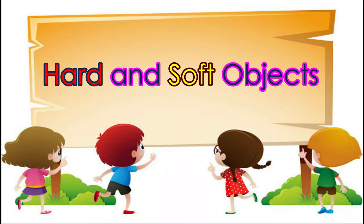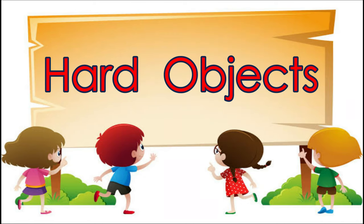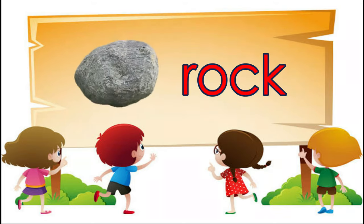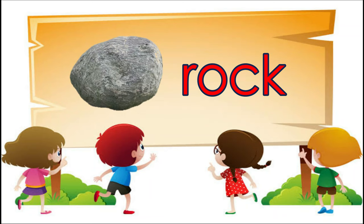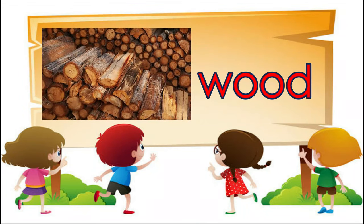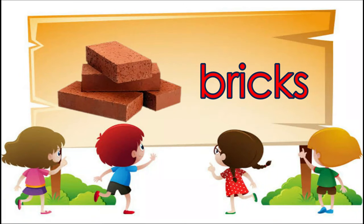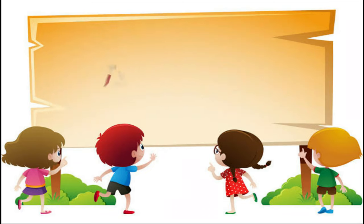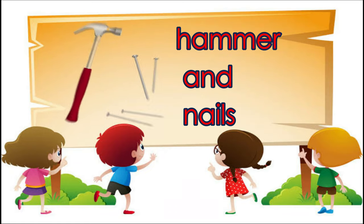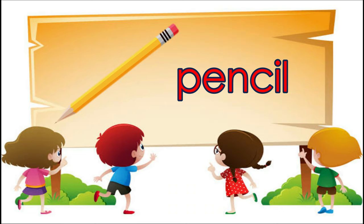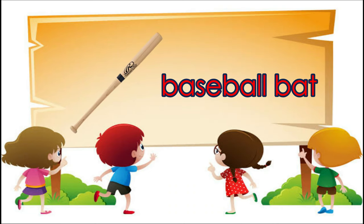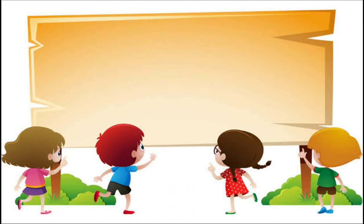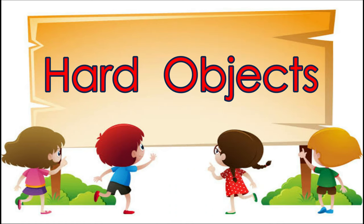Hard and Soft Objects. Let's go to the hard objects. Rock. Wood. Bricks. Floor tiles. Hammer and nails. Pencil. Baseball bat. They are examples of hard objects.